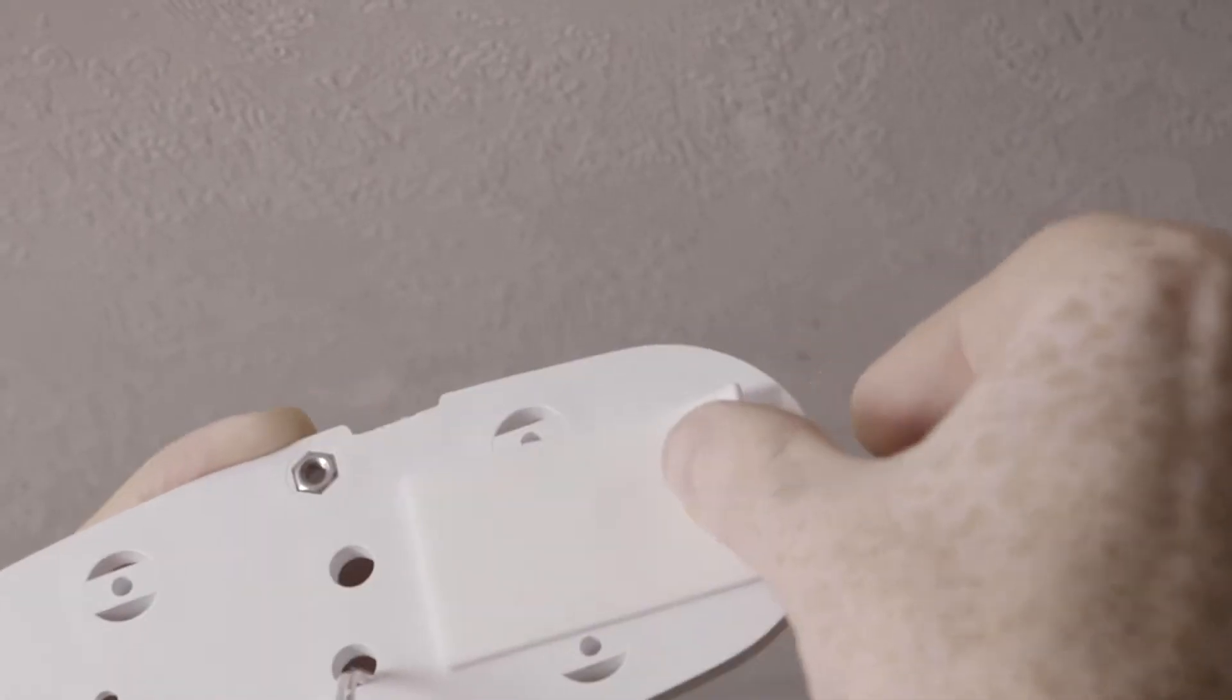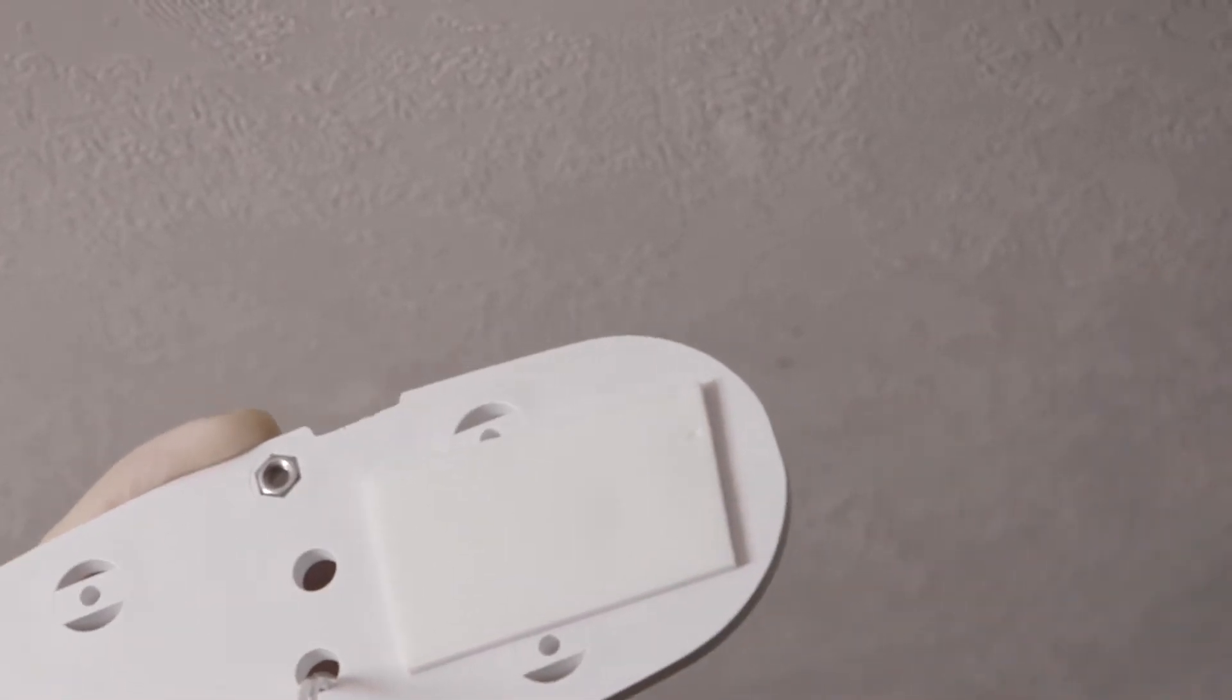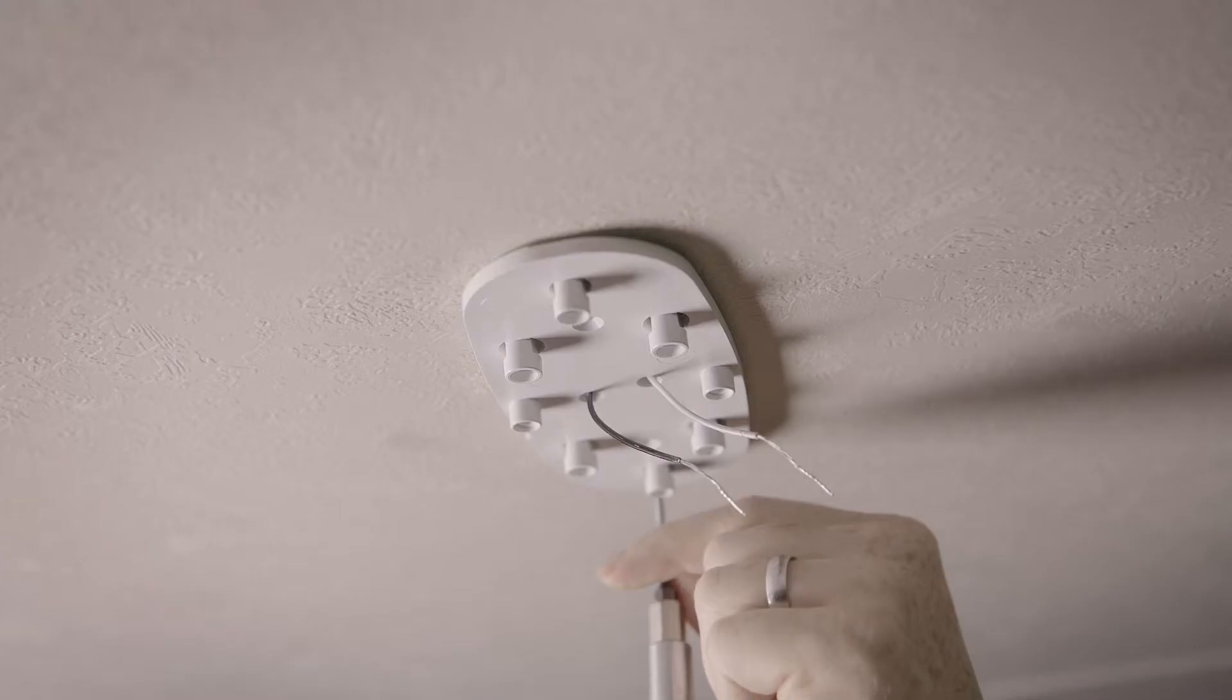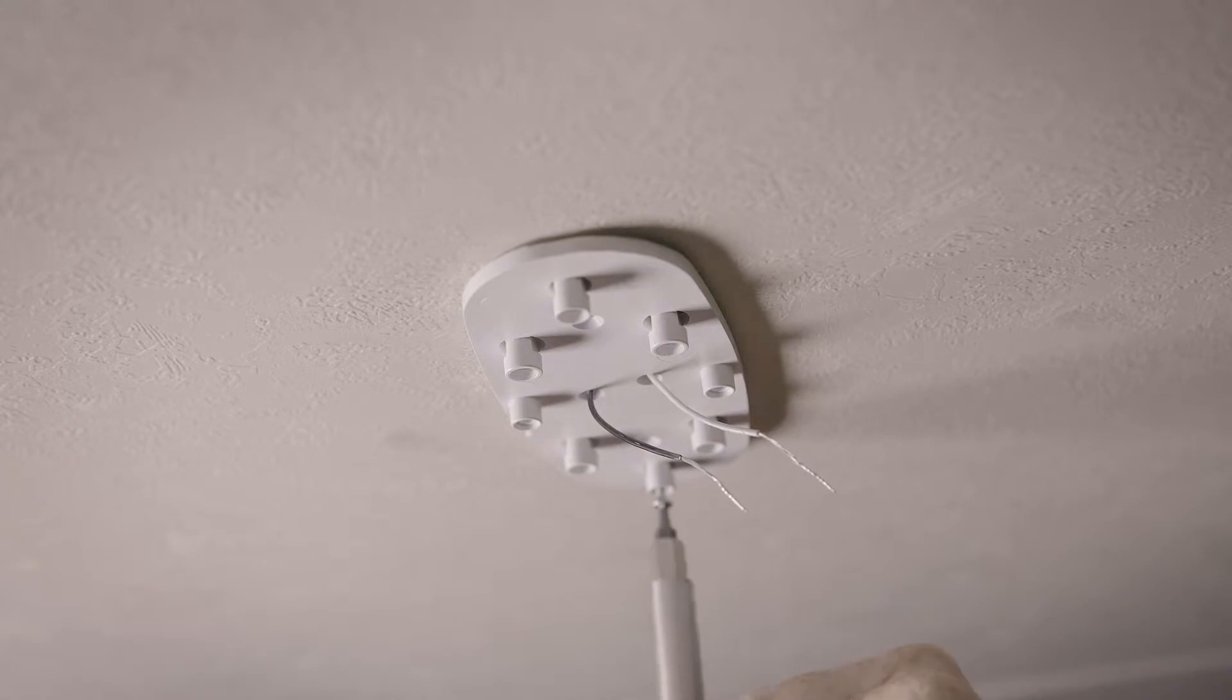Using the double-sided tape provided, attach the backing plate to the surface. Secure the backing plate to the ceiling with six number 6 screws.